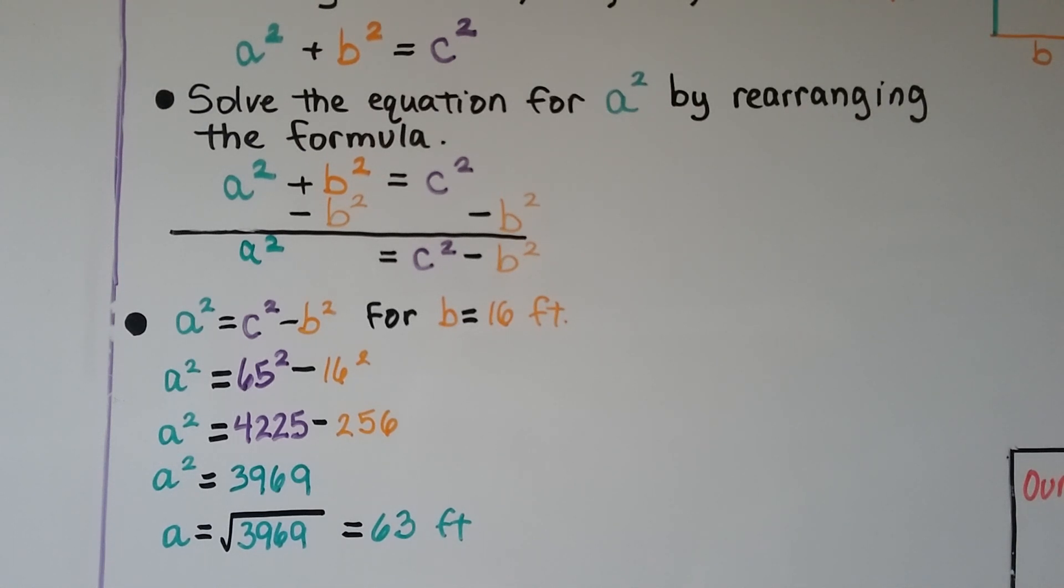That's not 63 feet squared because we didn't have 65 squared in the beginning. We only had 65. We squared it to put it into the formula.